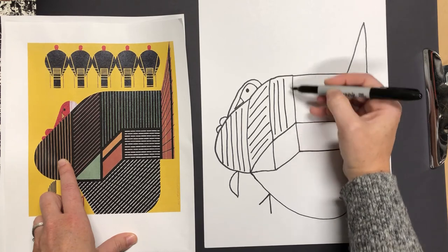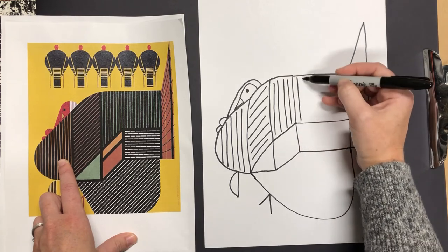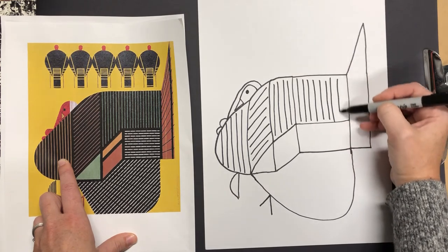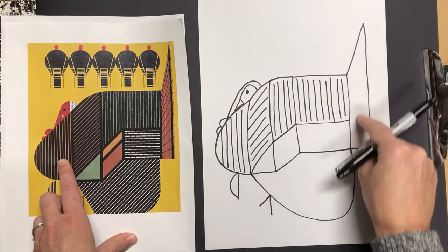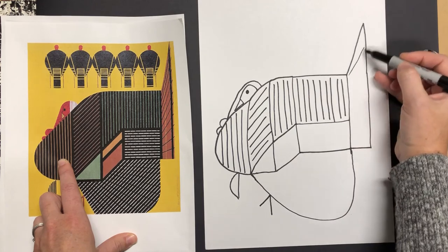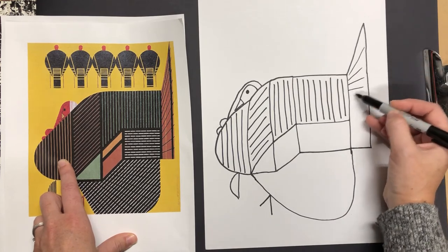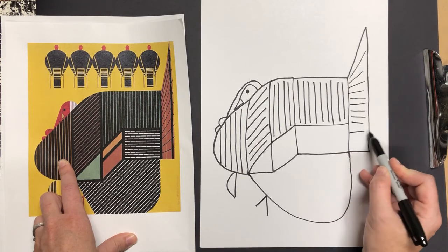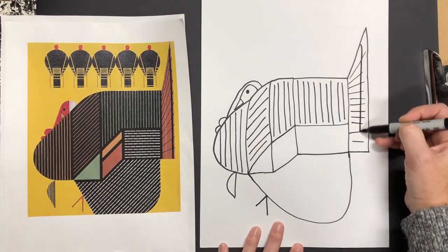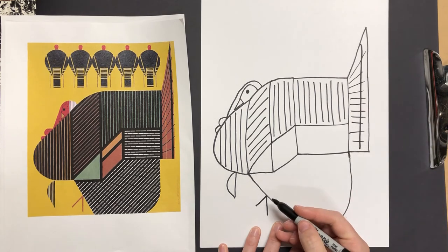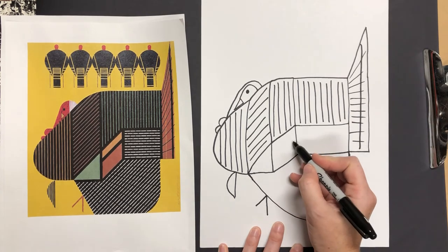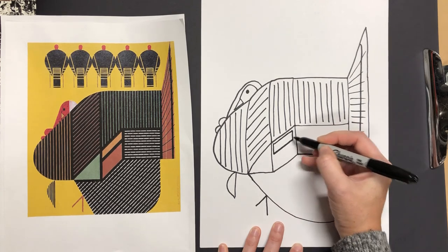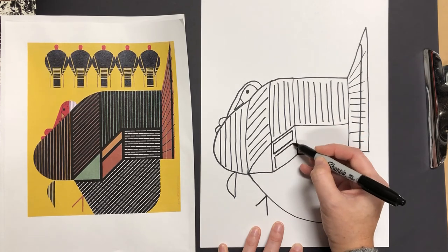Now you might remember, we did the Yayoi Kusama. And if you would like to create more of a patterned effect or a Zentangle effect on the inside, you can do that too. So this is where you can get a little bit more creative as an artist, and kind of start to design it on your own. Or you can follow just exactly like he did. Totally your call.